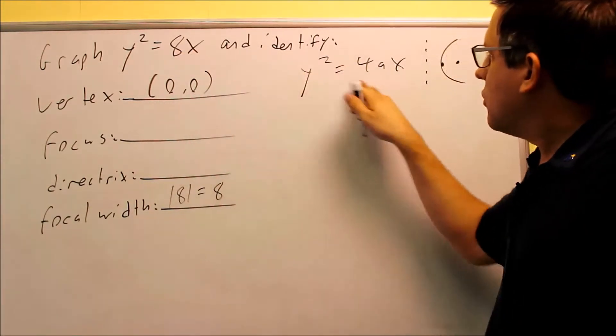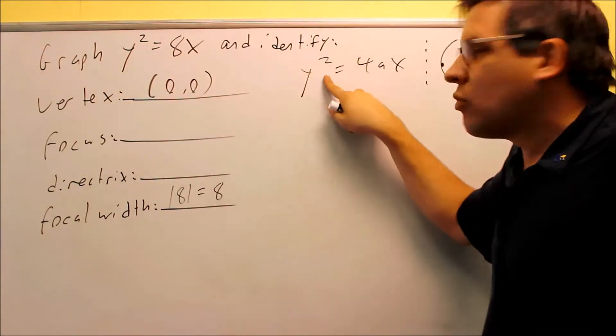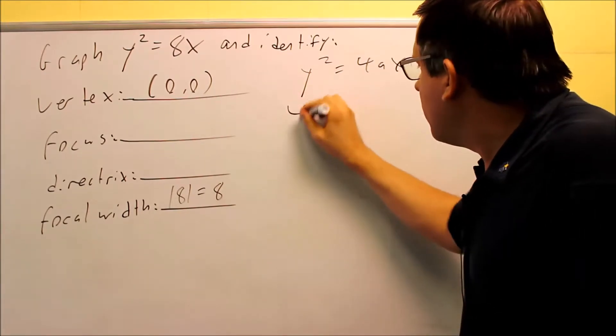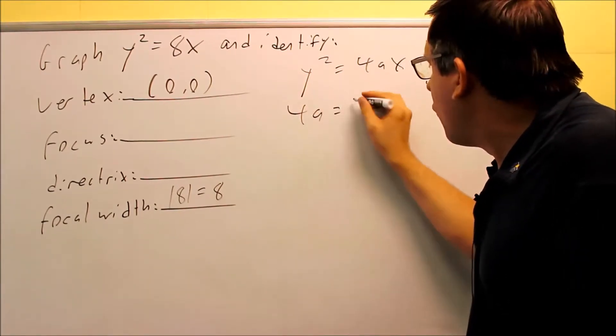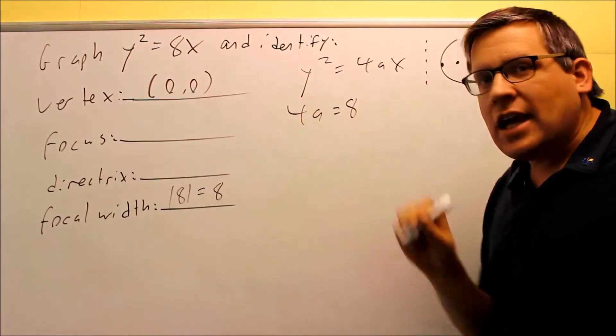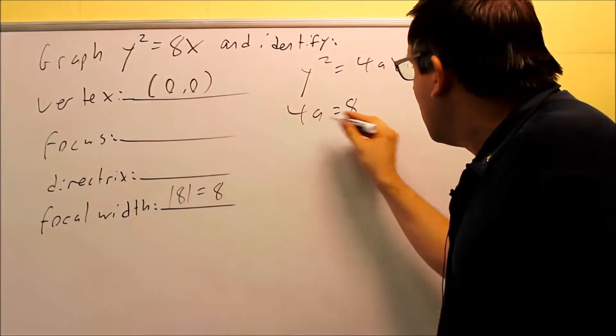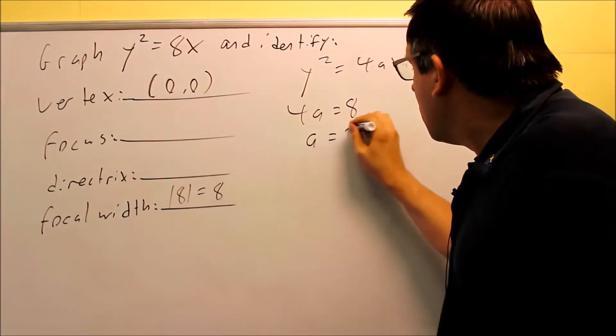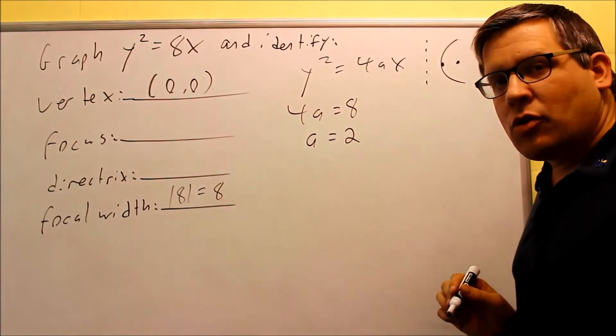So we're going to match these two formulas together. I already have y squared and y squared match, and my x's match. All I'm going to do now is I'm actually going to take the 4a and set that equal to 8. That's the number in front of the x there. And if I divide both sides by 4, I'll get my a value is equal to 2.